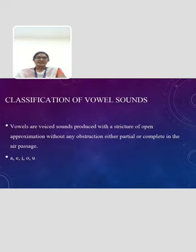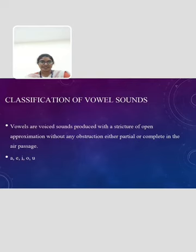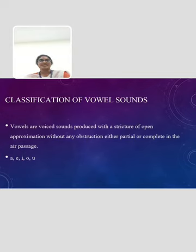The next topic is Classification of Vowel Sounds. Vowels are voiced sounds produced with a structure of open approximation without any obstruction, either partial or complete, in the air passage. All vowels are normally voiced. We all know that vowels are a, e, i, o, u.